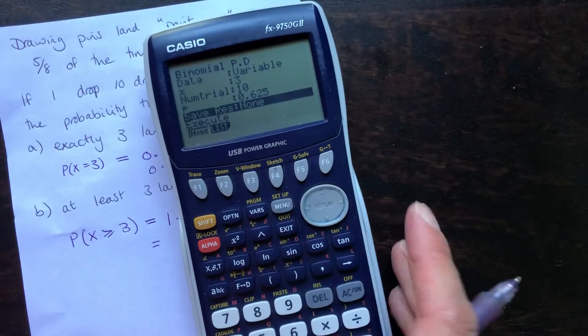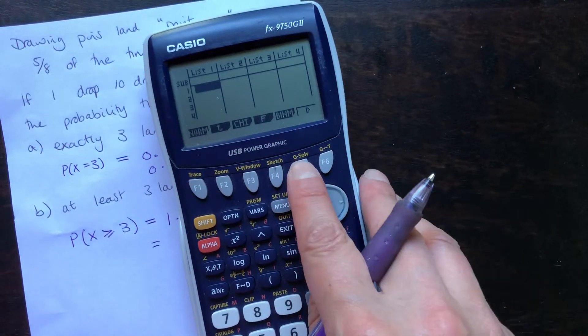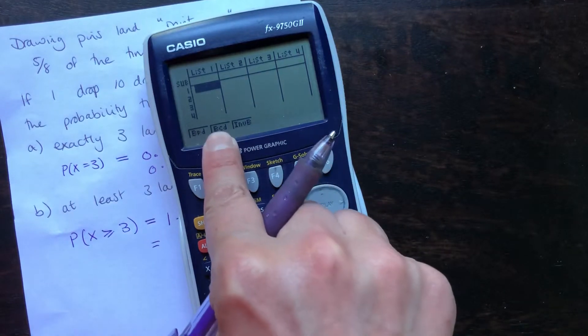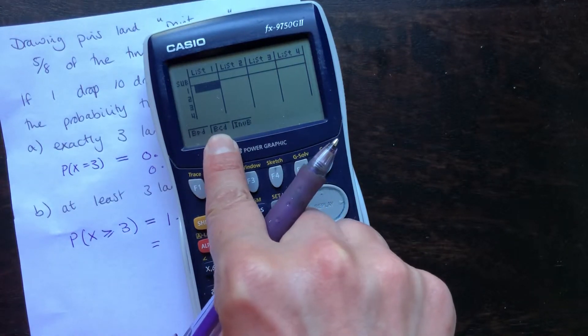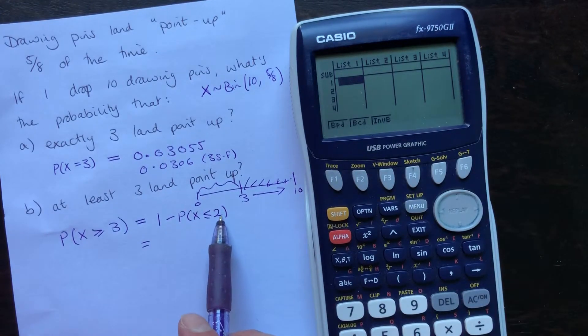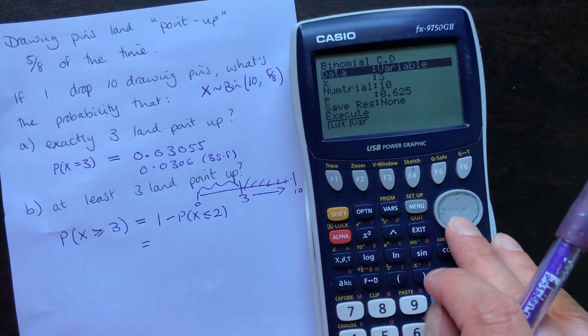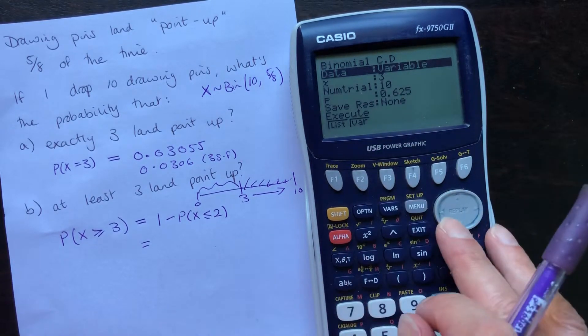Your calculator can cope with the less than or equals. If we exit back out to our distributions, binomial, this time you want the BCD, C for cumulative. We're going to test all of the values up to and including two. So, we need cumulative here. The variable stays the same at the top there. We're entering variables.